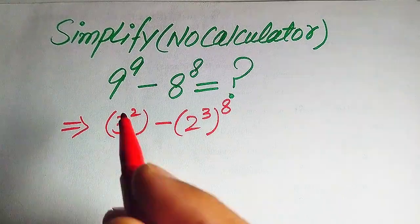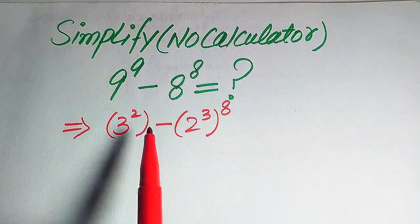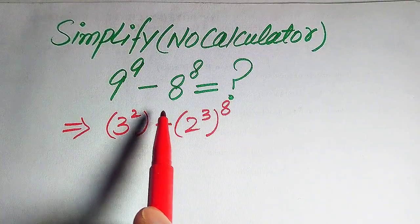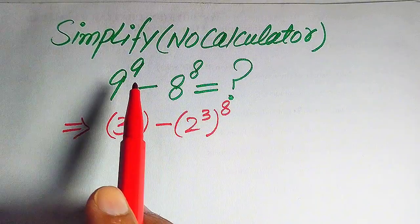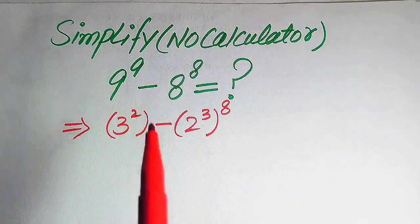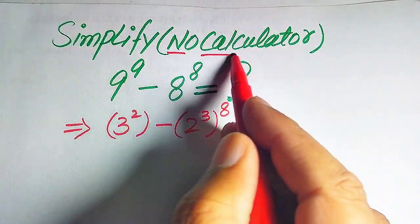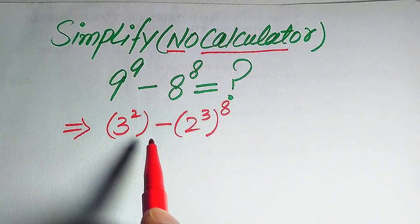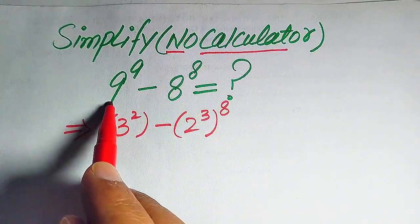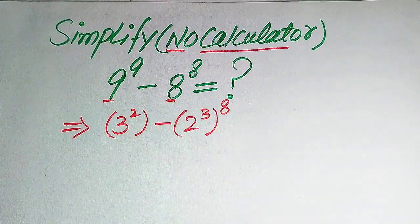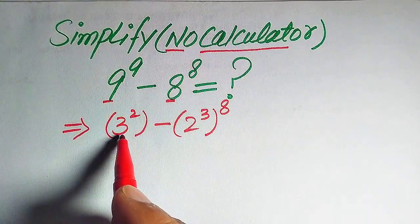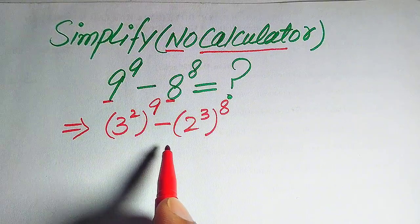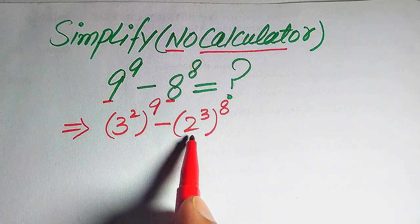Hello everyone. How to simplify this nice algebraic expression: 9 to the power of 9 minus 8 to the power of 8. We will write this algebraic expression into simplified form. Remember, a calculator is not allowed in this problem, so we need to show all working on paper. The first thing we do is write the bases of both terms into prime factor form. The prime factors of 9 are 3 squared, raised to the power of 9, minus the prime factors of 8 are 2 cubed, raised to the power of 8.